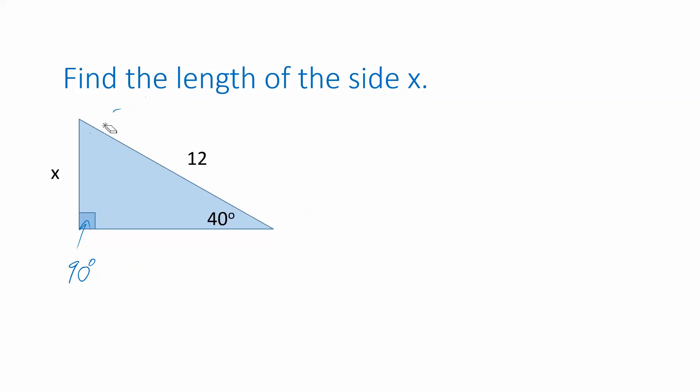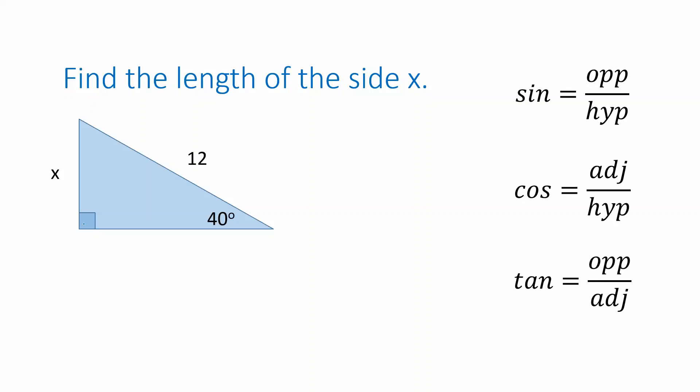I want to illustrate the following technique for finding the side of a right triangle when you know an interior angle and the length of the hypotenuse. The hypotenuse is the long side opposite the right angle. To answer this, we're going to use the definitions of the trigonometric functions sine, cosine, and tangent.